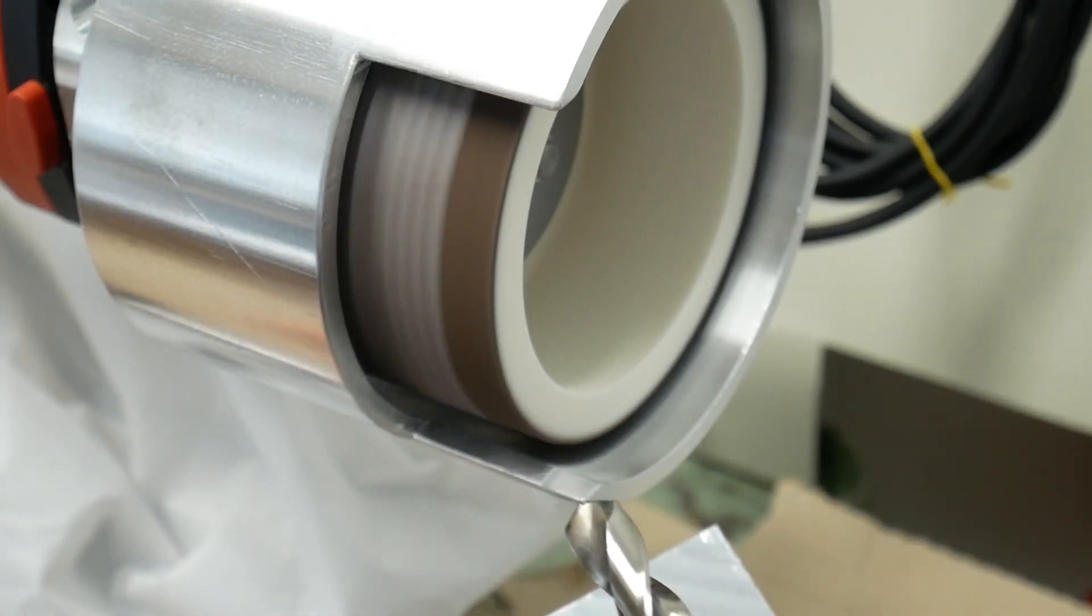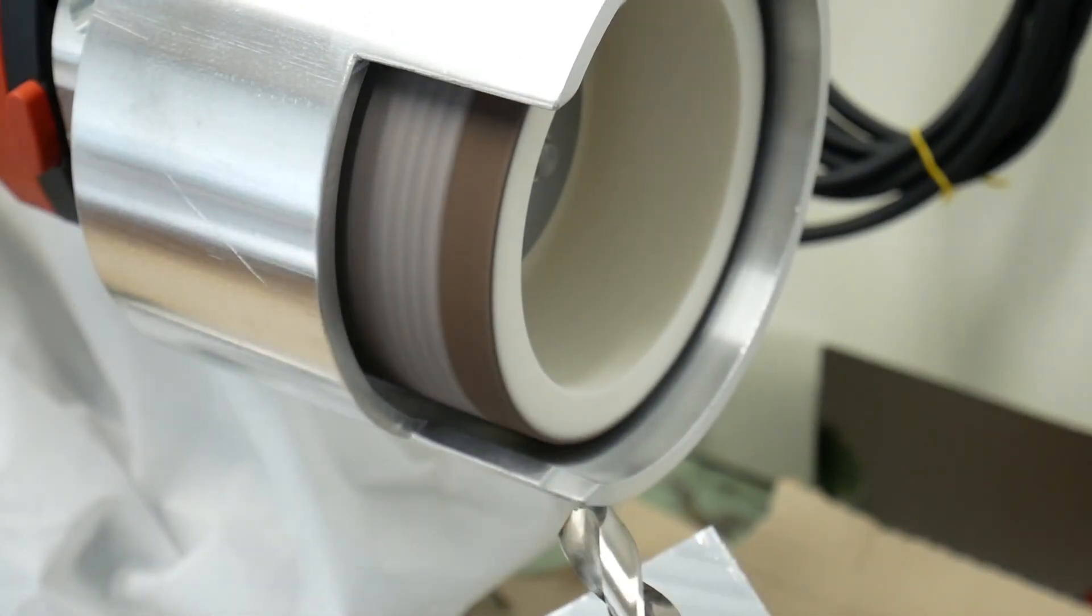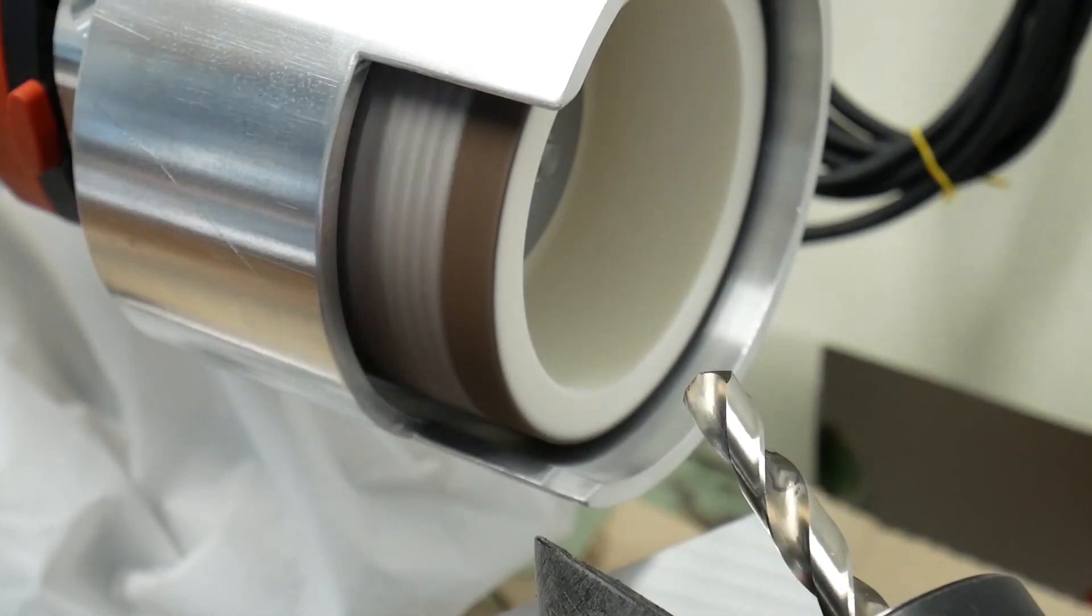Switching to 20 degrees clearance angle for the secondary relief and then bringing the drill back to the grinding wheel.